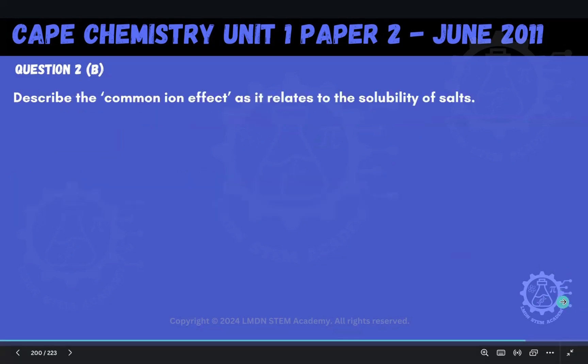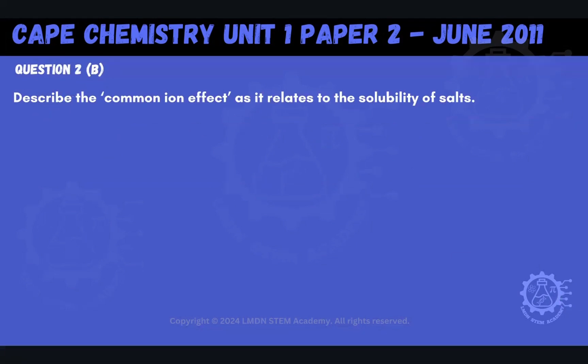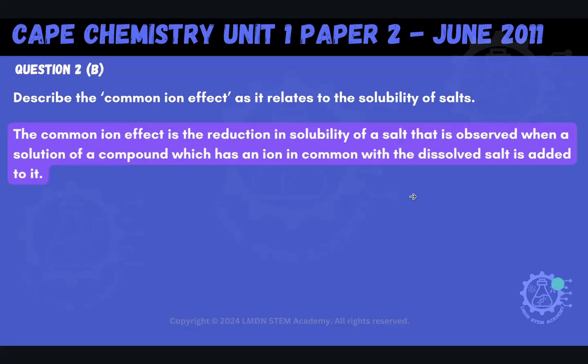And that leads us to our next question, in question 2b, where it's asked us to describe the common ion effect as it relates to the solubility of the salt. So here's what the common ion effect is. The common ion effect is the reduction in solubility of a salt that is observed when a solution of a compound which has an ion in common with the dissolved salt is added to it.